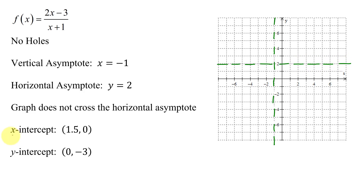Then I have an x-intercept of (1.5, 0). Here's 1, here's 2, halfway in between is 1.5. And finally, my y-intercept of (0, negative 3), which is right here.